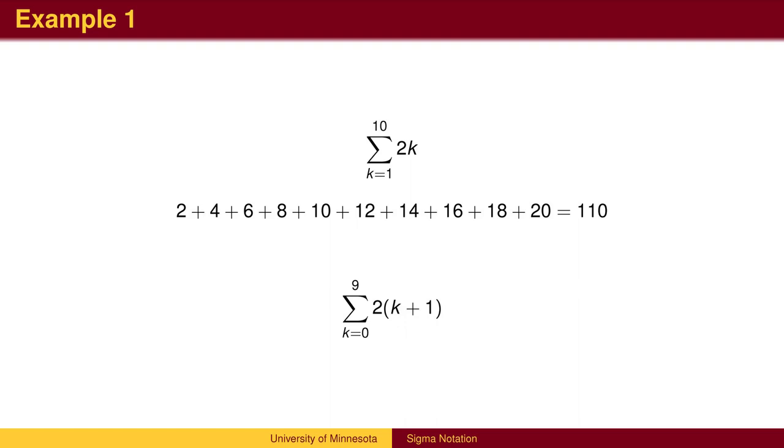We could get the same series by writing the sigma notation in a different way. When we plug 0 into this formula, we get 2. When we plug in k equals 1, we get 2 times 1 plus 1, which is 4. In fact, we get precisely the same sequence of numbers to add.